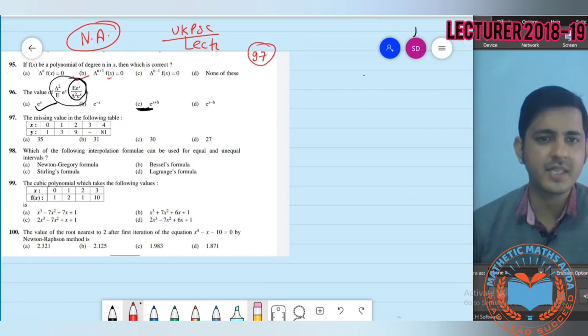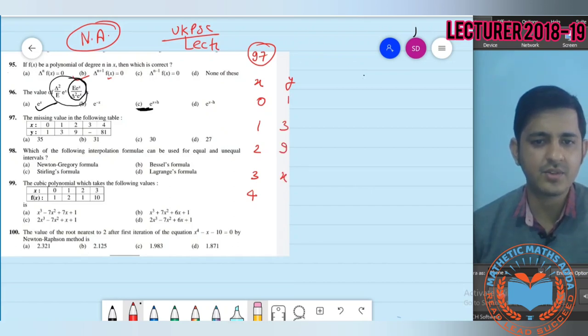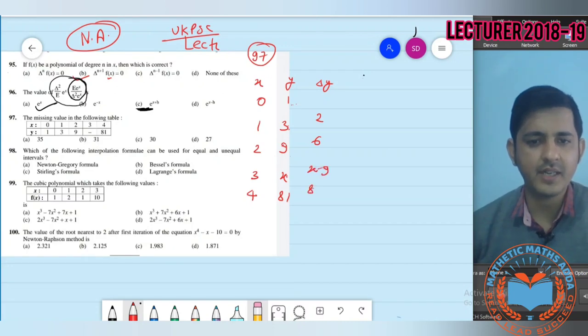97th question is about missing value in a forward difference table. x has values 0, 1, 2, 3, 4 at equal intervals. y has values 2, 3, 9, 1, 1. The first difference: 3 minus 2 is 1, 9 minus 3 is 6, x minus 9, 81 minus x.